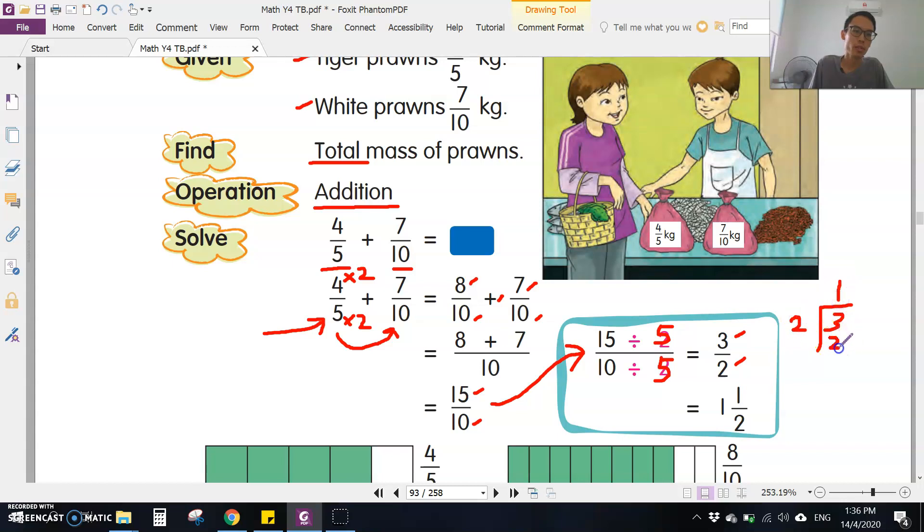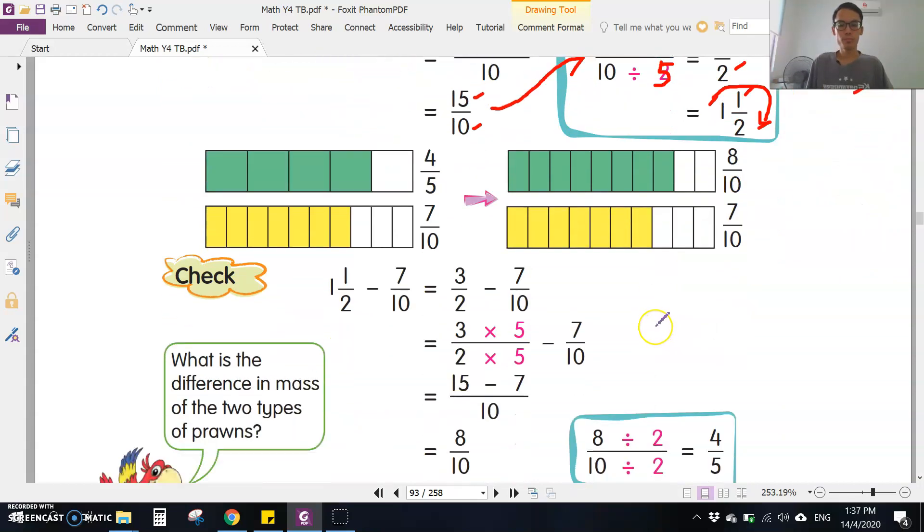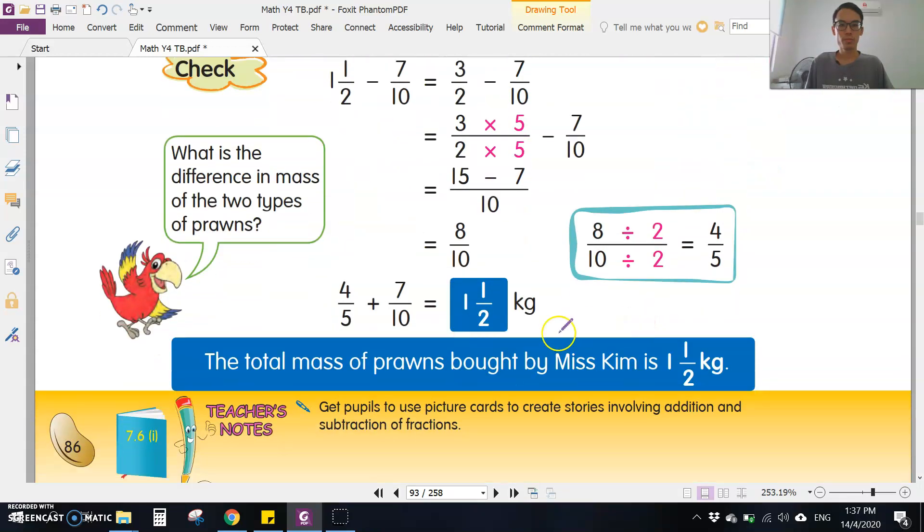Or 3 divided by 2: one times 2 is 2, balance is 1. Follow clockwise direction. So the total is 1 1/2 kg. Remember to write your kg - if you don't write kg, it's considered wrong.